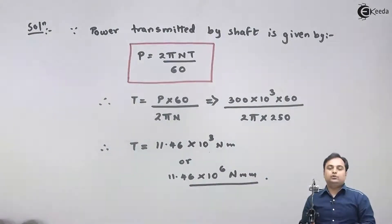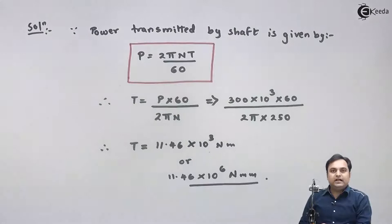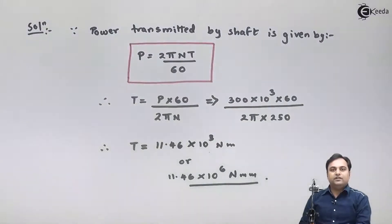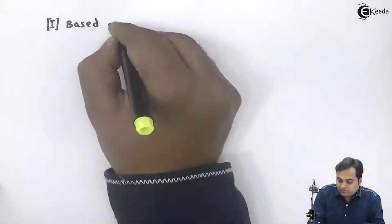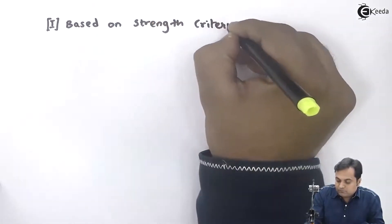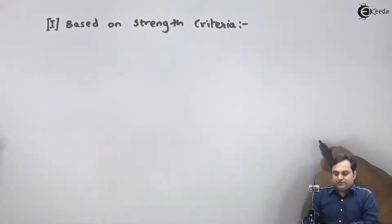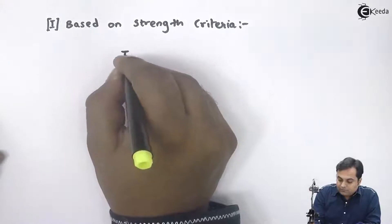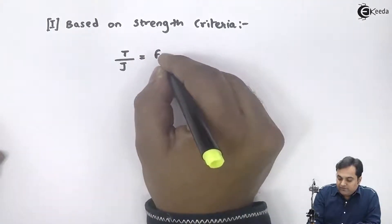Now that we have the torque value, we need to calculate the diameter of the solid shaft using two criteria: first, the strength criteria, and second, the rigidity criteria. Based on the strength criteria, the equation is: T upon J equals fs by r.